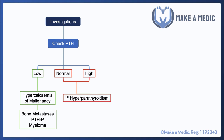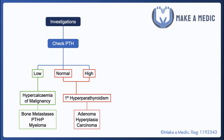If the PTH is normal or high, that is suggestive of primary hyperparathyroidism. It may seem confusing that a PTH within the normal range can still represent hyperparathyroidism, but PTH should be responsive to serum calcium levels — if serum calcium is high, you'd expect PTH to be low. If it isn't low, that is abnormal and usually suggestive of primary hyperparathyroidism. Causes of primary hyperparathyroidism include parathyroid adenomas, hyperplasia, or carcinoma.